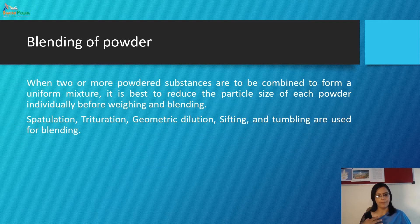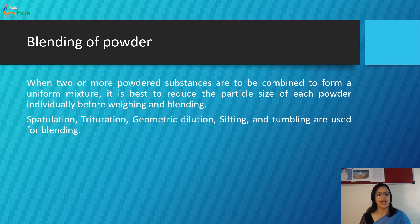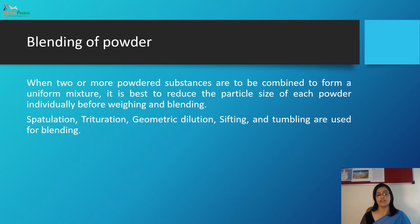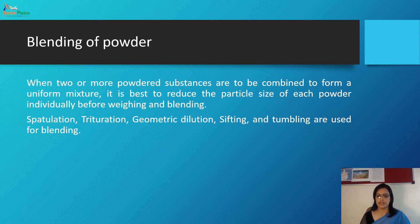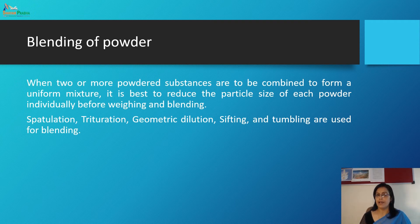Moving to the blending of powders. Blending is when two or more powder substances are combined to form a uniform mixture. It is best to reduce the particle size of each powder individually before weighing and blending. The method of blending depends on the nature of the ingredient, the amount of powder, and the equipment available. Powders may be blended by spatulation, trituration, geometric dilution, sifting, and tumbling.